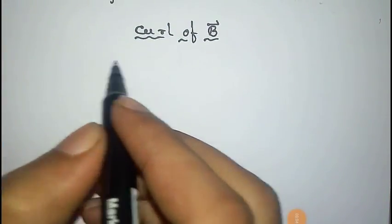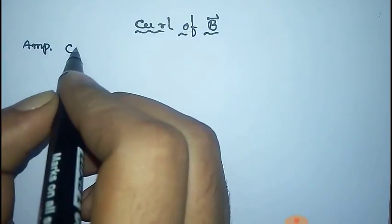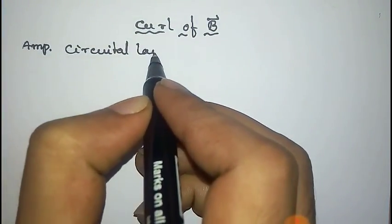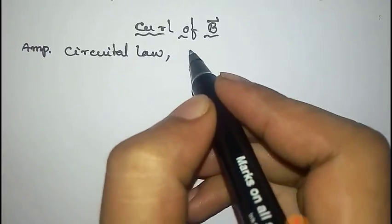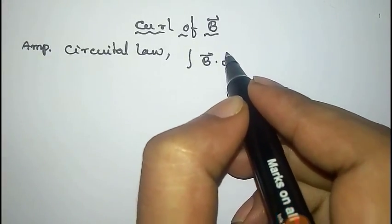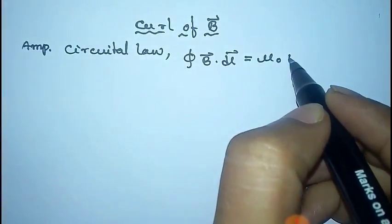We have to derive the relation curl of B equals μ₀j from Ampere's circuital law, which states that the closed line integral ∮B·dl equals μ₀I.